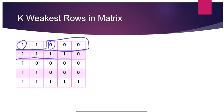How are we defining which matrix rows are weakest? If a row has fewer soldiers than another row, then that row is considered the weakest. If two rows have the same number of soldiers, then whichever row comes first is considered weaker than the row coming behind it.